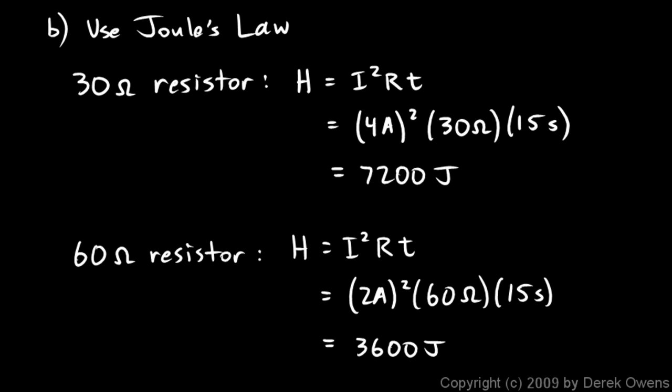Some people find it interesting: the resistance that's smaller, the 30 ohm resistance, has more power, more heat. The amount of resistance doesn't determine the amount of heat. Higher resistance, the 60 ohm here, means more resistance to current flow so less current flows.